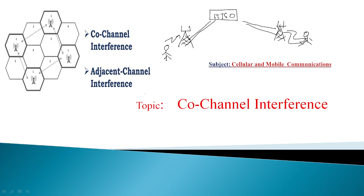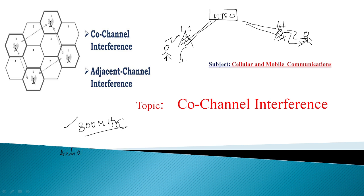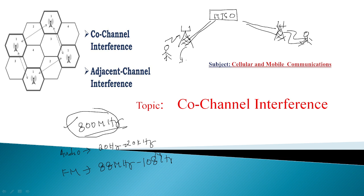In this process, what is co-channel interference and what is the same group of frequency? For example, after 800 MHz, frequencies can be used for mobile communication systems. For audio signal communication, the audio frequency range is 20 Hz to 20 kHz. For FM radio communication, the frequency range is 88 MHz to 108 MHz. So after 800 MHz, we use frequencies for mobile communication signal transmission.